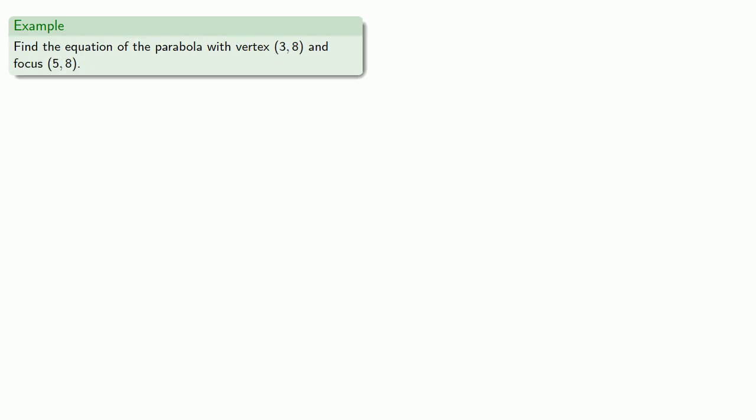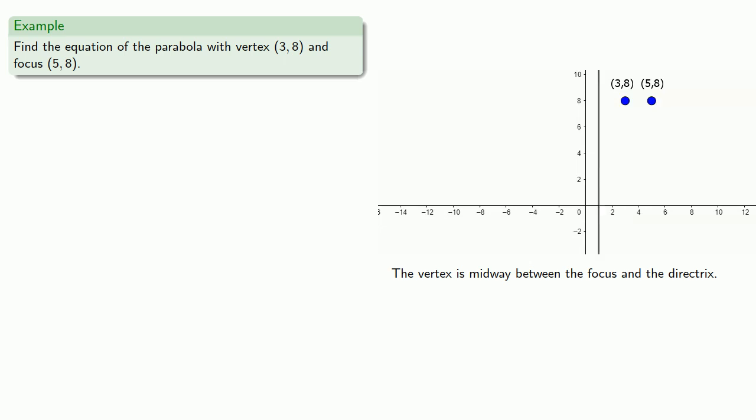Or suppose we know where the vertex and the focus are. So graph and label. So remember the vertex is midway between the focus and the directrix. And given the way the points are located, that means our directrix must be vertical with equation x equal to 1. And it also means our parabola is horizontal.